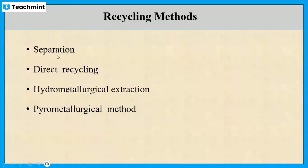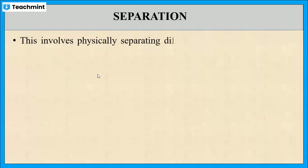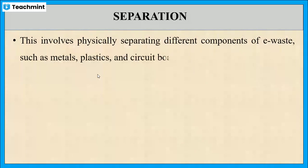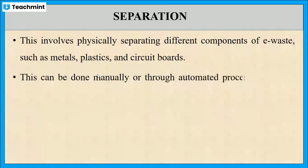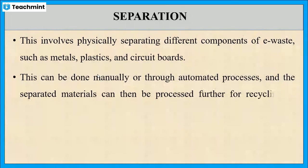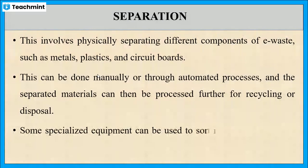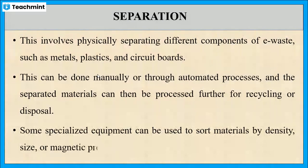Let us see in detail about the separation method and direct recycling method. In the separation method, e-waste components like metals, plastics, and circuit boards are physically separated, either manually or through an automated process. After that, the separated materials are processed once again for recycling or disposal. Some specialized equipment can be used to sort the materials by density, size, or magnetic properties.